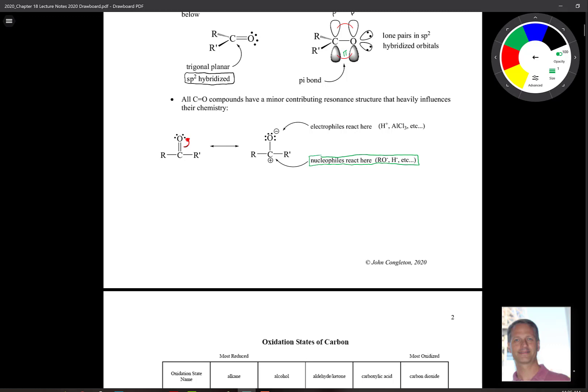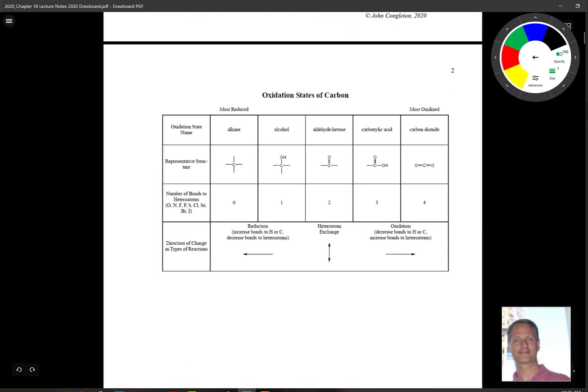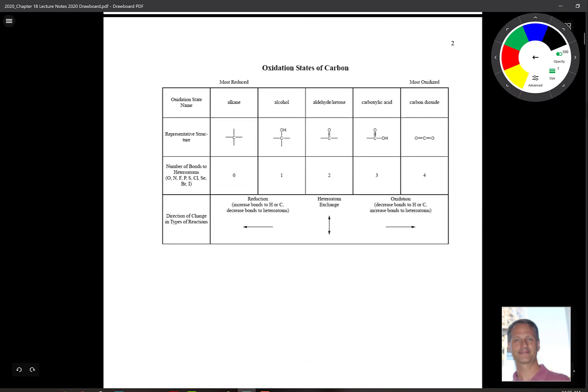Now the other thing that we have to talk about here, as we go through some introductory material, is we need to review the idea of oxidation and reduction of carbon compounds. So in this table, we can see that we have different compounds from alkanes to alcohols, aldehydes, ketones, carboxylic acids, carbon dioxide. As you go from the left to the right,